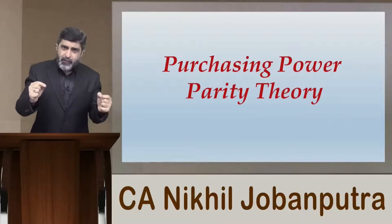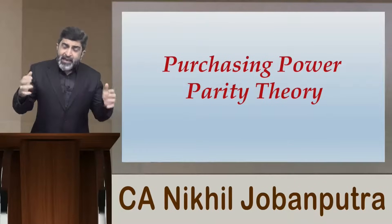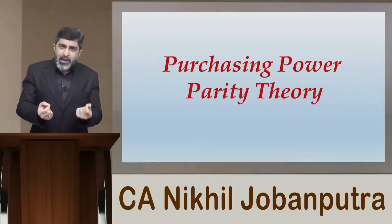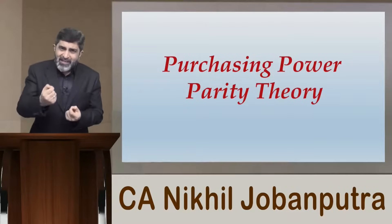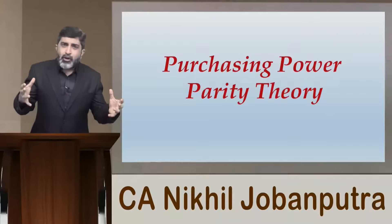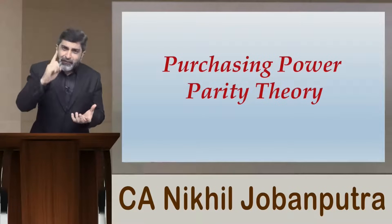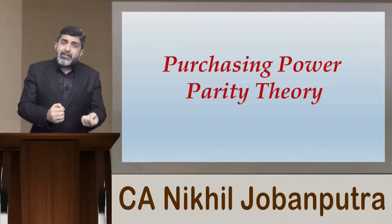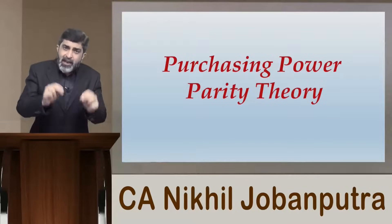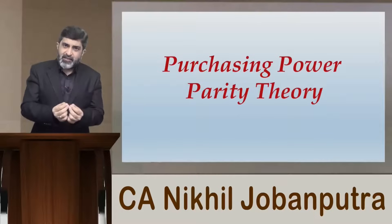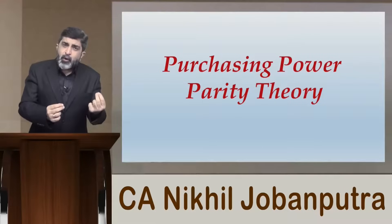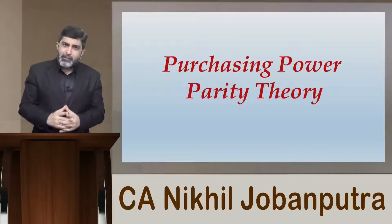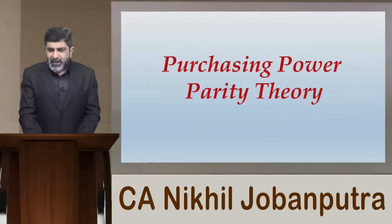Purchasing power parity talks about the law of one price. One unit of GBP, one unit of USD, one unit of Euro, one unit of Japanese yen, one unit of Indian rupee — they are not at parity. They all have different degrees of purchasing power. Therefore, the concept of purchasing power parity can be used to identify the relationship between these currencies. For example, if you want to find what would be the worth of one Euro against one US dollar, you can use the concept of purchasing power parity.